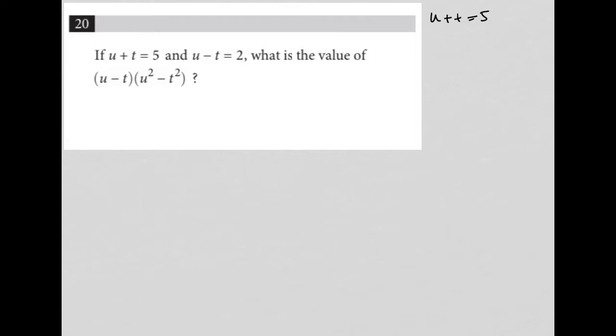Let me write that a little bit better so we can tell the difference between the plus and the t. So u plus t equals 5, and u minus t equals 2.